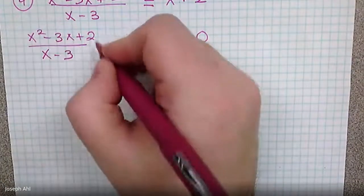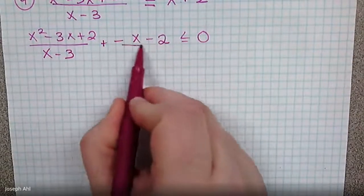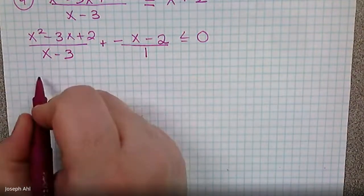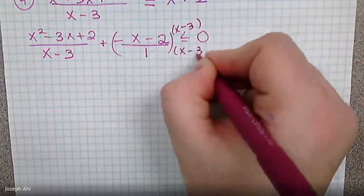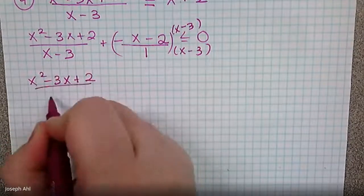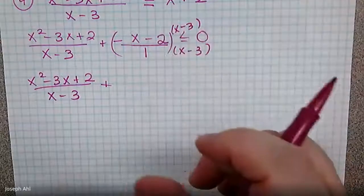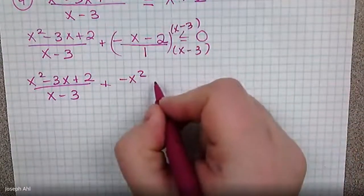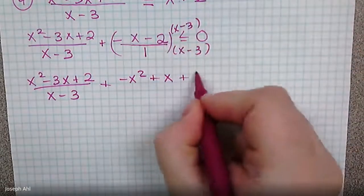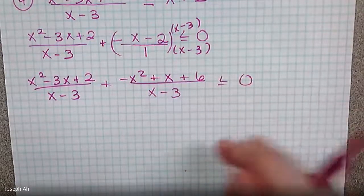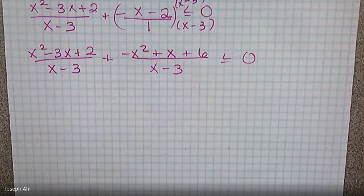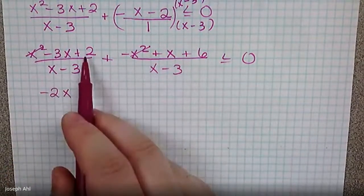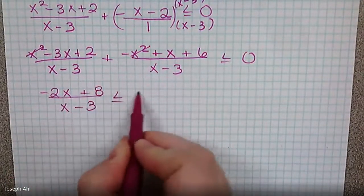Treat negative x minus two as one binomial and multiply it by x minus three over x minus three. Distributing via FOIL gives negative x squared plus three x minus two x, combining for plus x in the middle, and negative two times negative three gives plus six, all over x minus three. Combining numerators: x squared and negative x squared cancel, negative three x plus x gives negative two x, and two plus six gives plus eight. Result: negative two x plus eight over x minus three, less than or equal to zero.